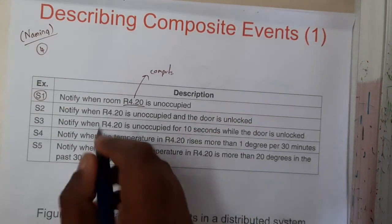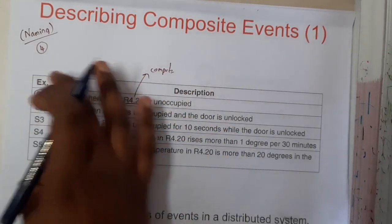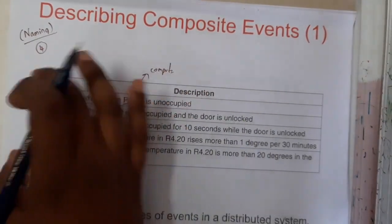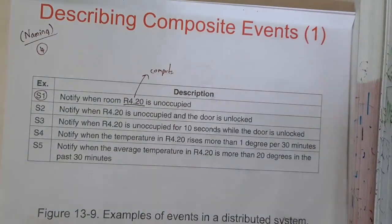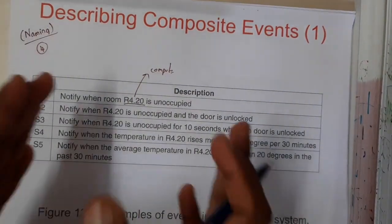So basically in simple words, you can say based on some particular events, you will be sending some messages. So that process is nothing but naming, guys. This is called composite events.